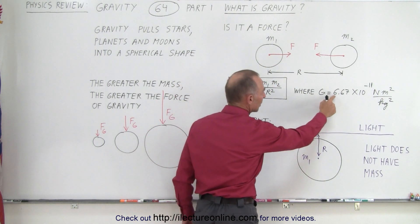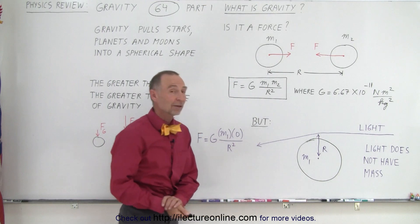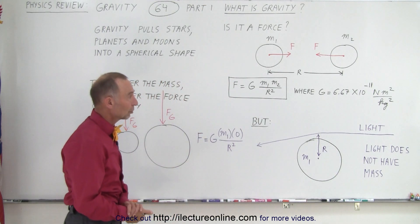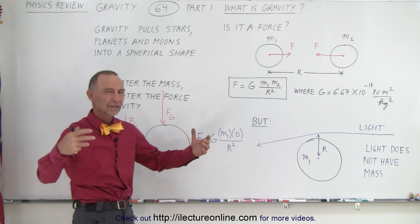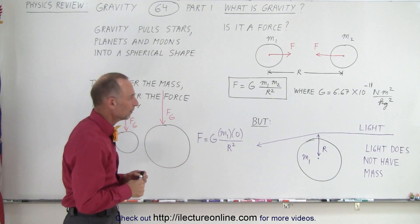And G is now known to be about 6.67 times 10 to the minus 11 Newton meters squared per kilogram squared. So given any two masses, you can calculate the force of attraction between them.